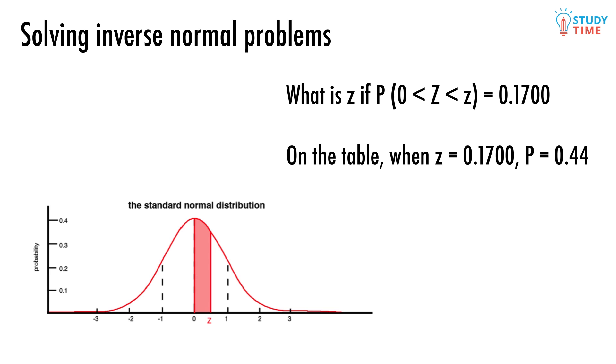So we need to look for our 0.17 somewhere in the middle of our table. The number that goes along with this is 0.44, and that's the answer we're looking for. So that's really the gist of how all inverse normal problems work.